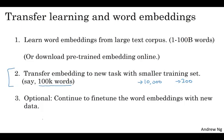So word embeddings tend to make the biggest difference when the task you're trying to carry out has a relatively small training set. So it has been useful for many NLP tasks. Just to name a few, it has been useful for named entity recognition, for text summarization, for co-reference resolution, for parsing. These are all pretty standard NLP tasks. It has been less useful for language modeling and machine translation, especially if you're actually using a language modeling or machine translation task for which you have a lot of data just dedicated to that task.